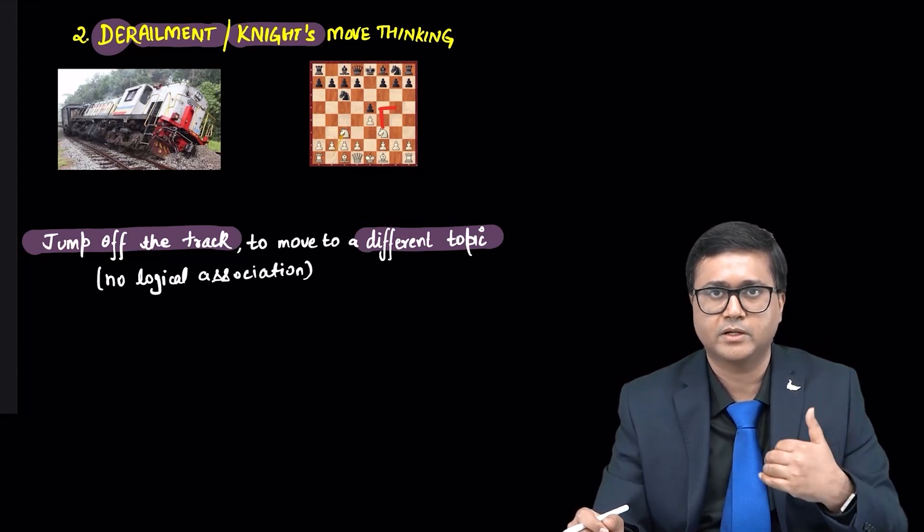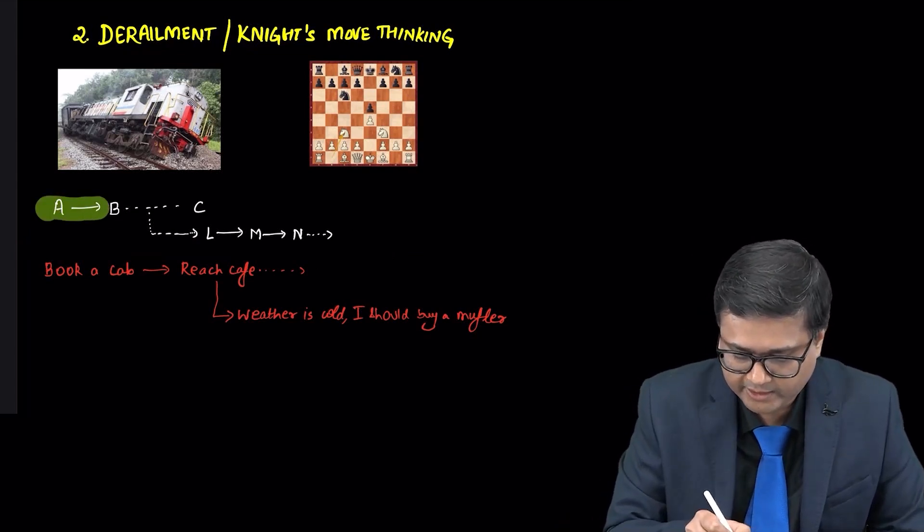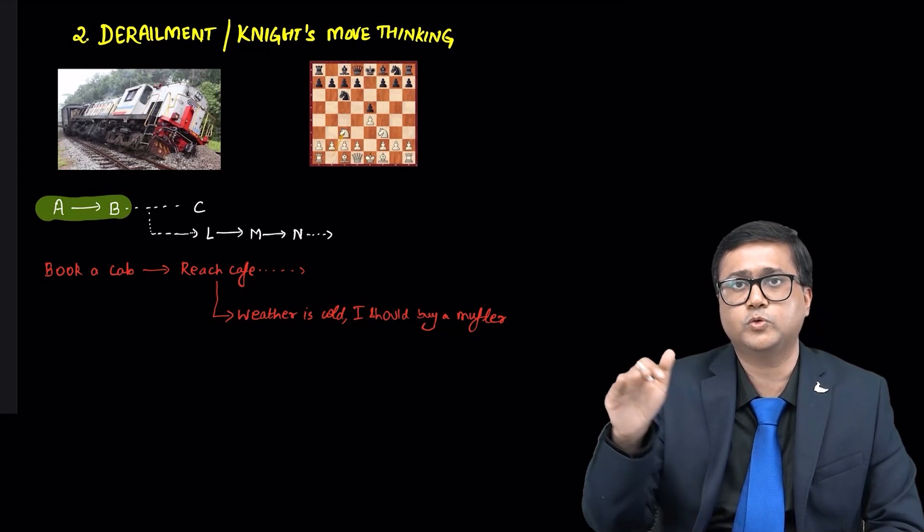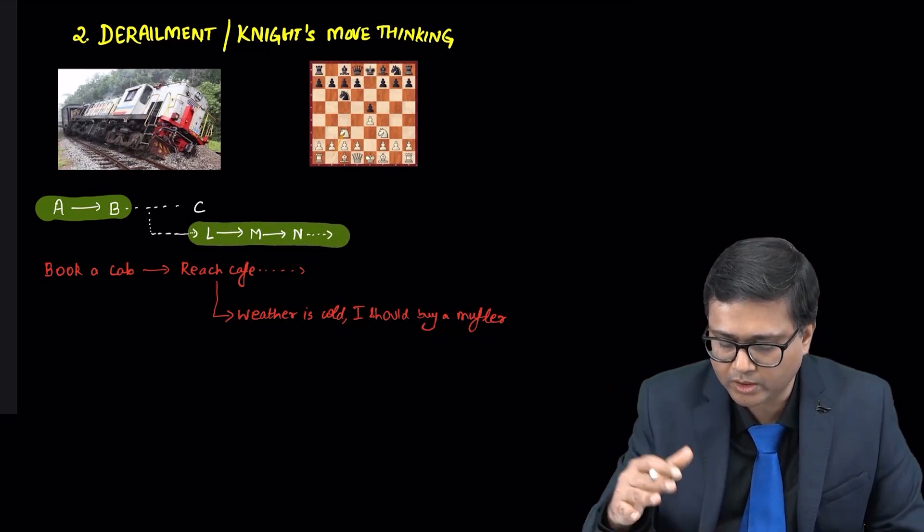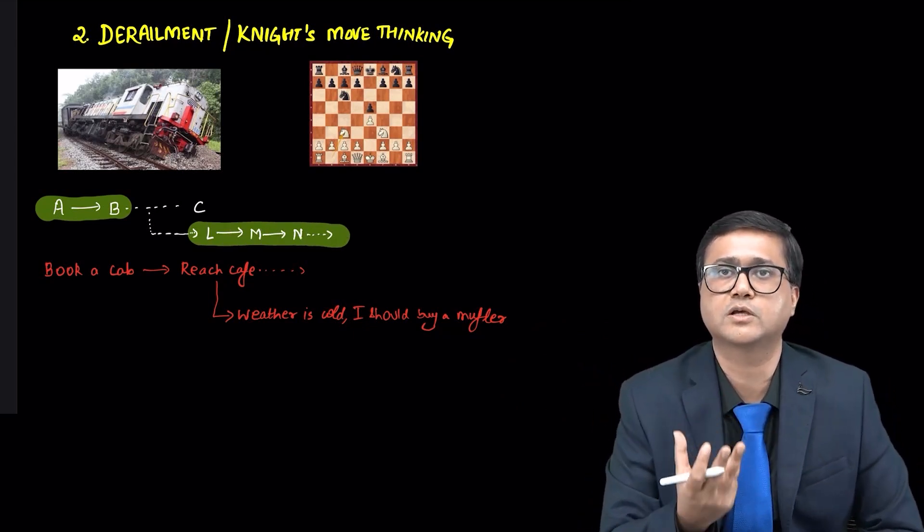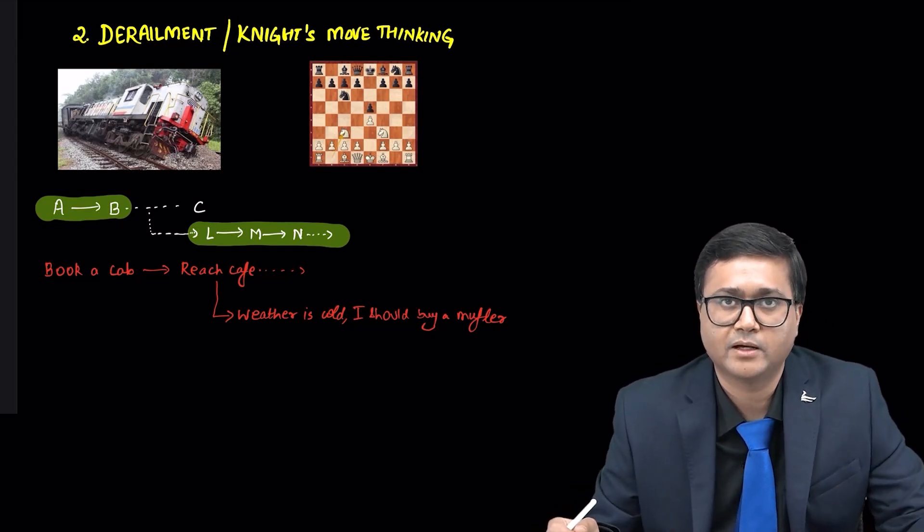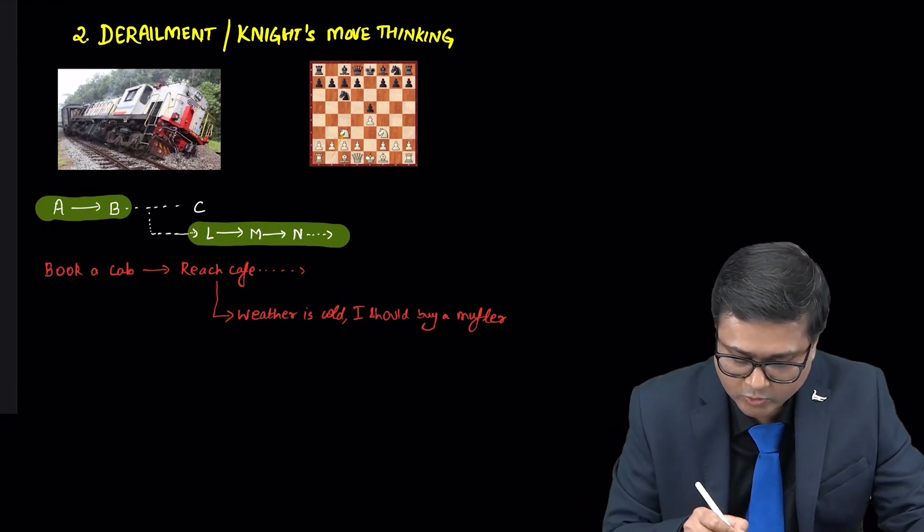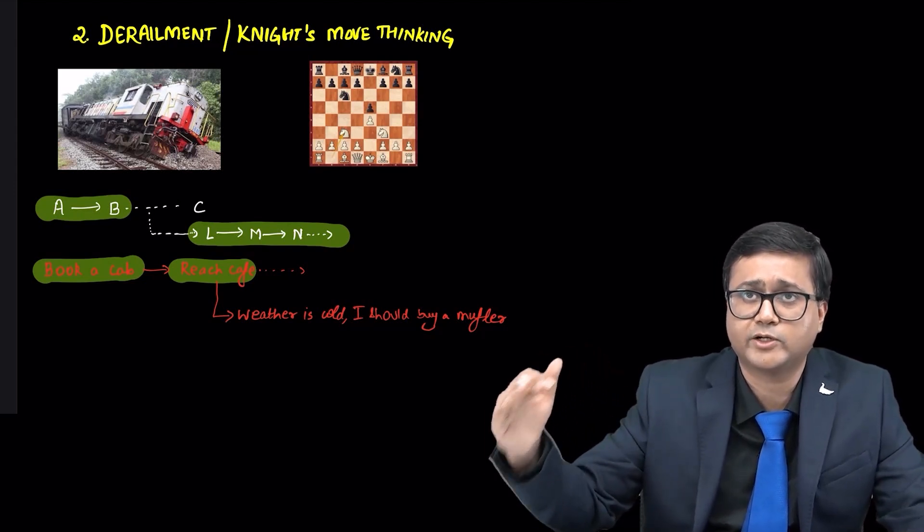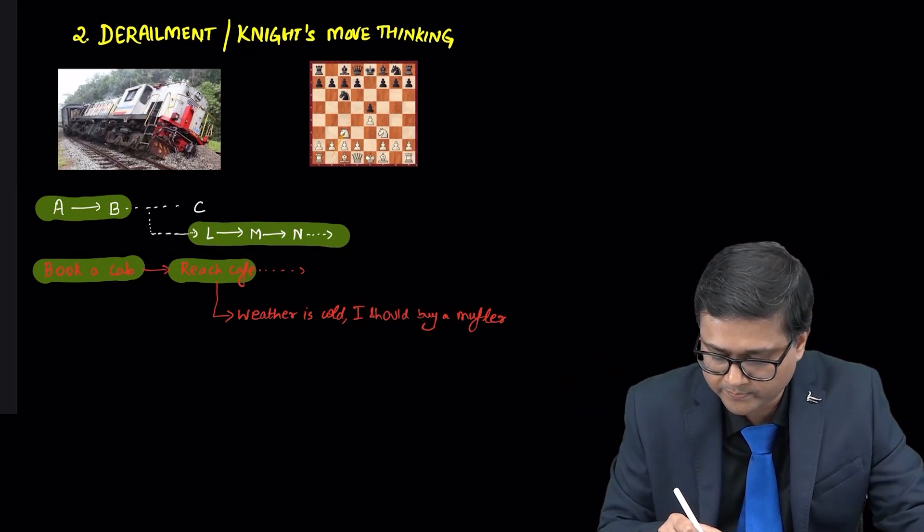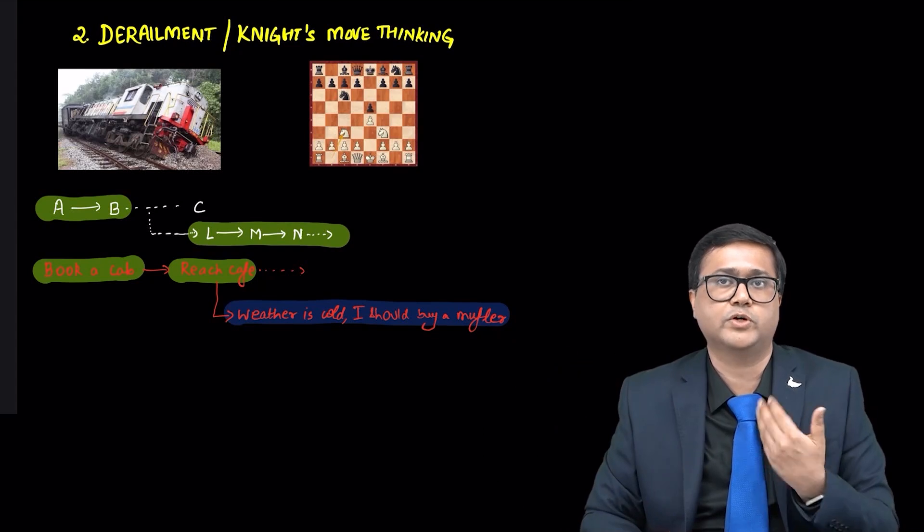Let us see what this person may appear like. The person is on track A followed by B. Now, rather than going to C, D, E on that same track, he changes track and comes to a new topic. This is what is derailment. Suppose you ask what will you do if you want to have a cup of coffee with your friend. He may say, I will book a cab, I will reach cafe, and rather than going on that topic, he changes the topic: the weather is very cold, I thought I should buy a muffler, and he goes to that new topic. This is what is derailment.